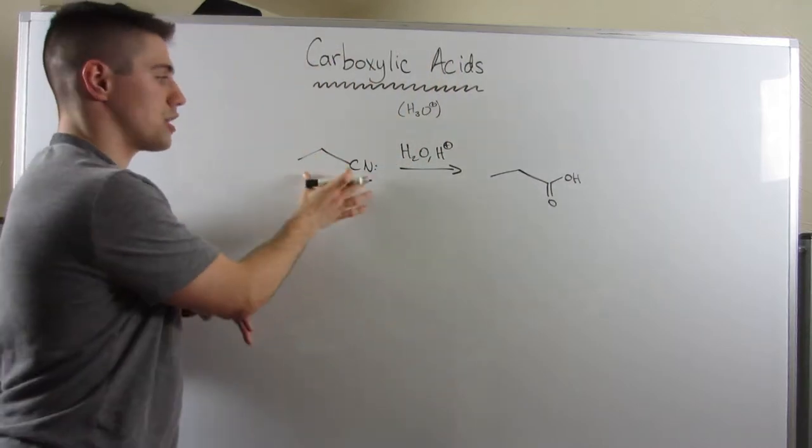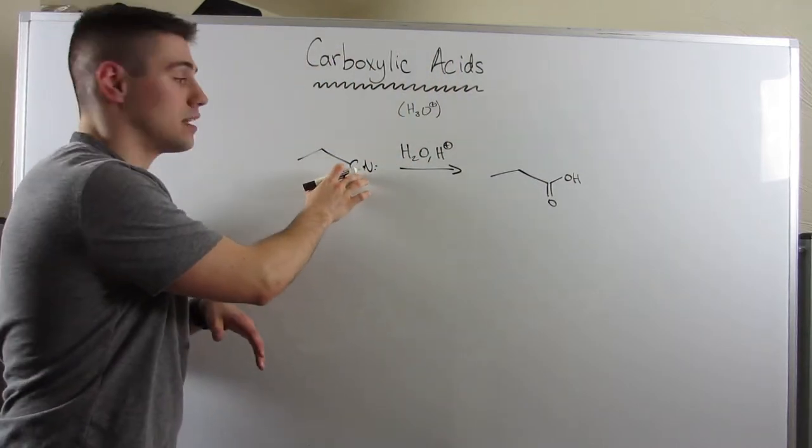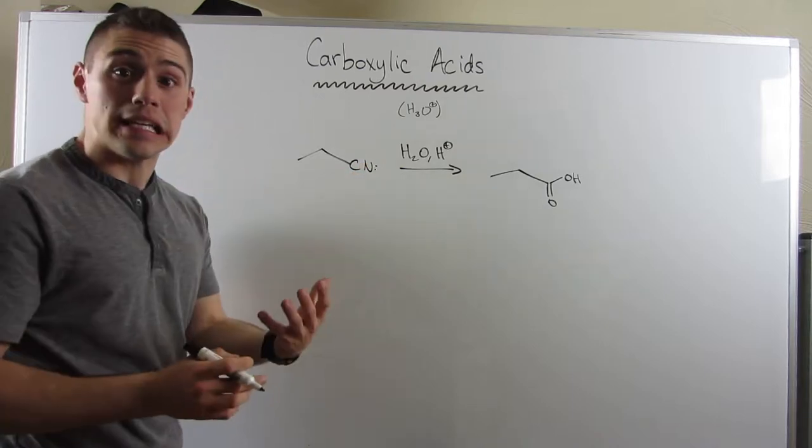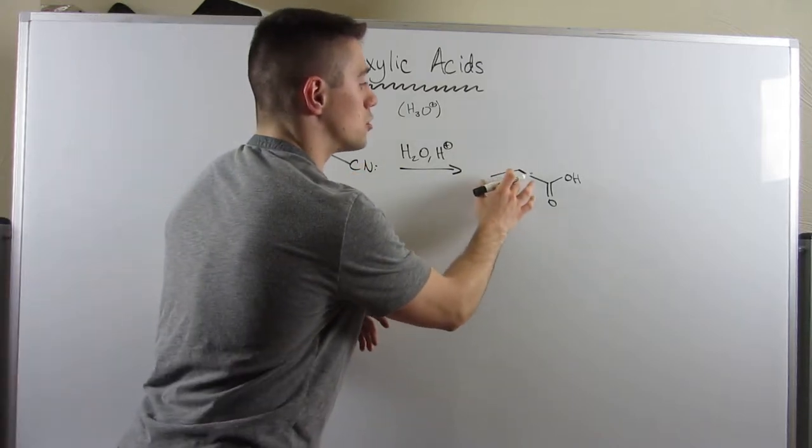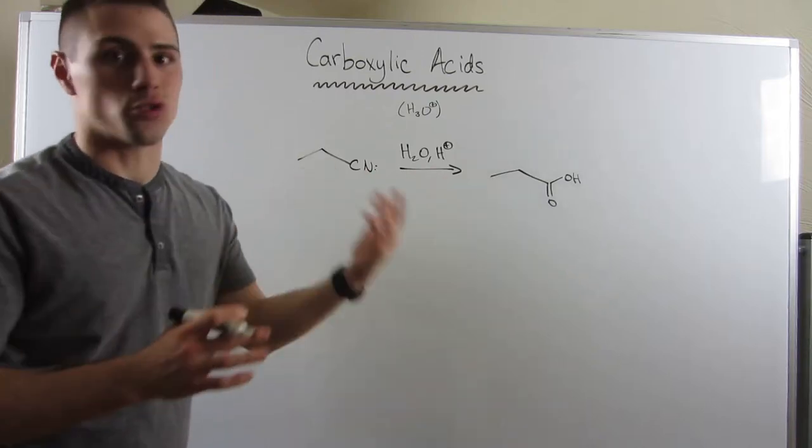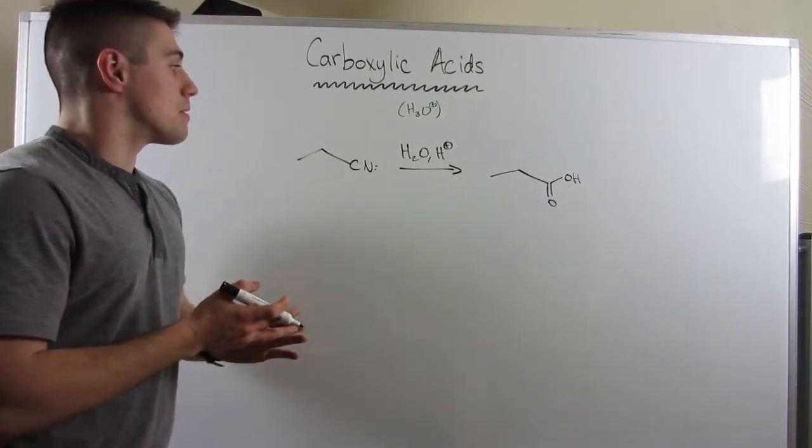The reaction you're going to do is transform this nitrile functional group into a carboxylic acid. Notice our chain is one, two, three carbons long. I'm explicitly drawing the C in the nitrile, but here it's just one, two, three carbons and I didn't draw the carbon. So what happened?